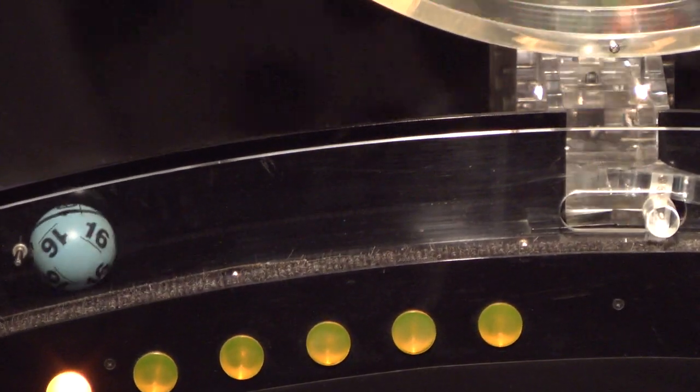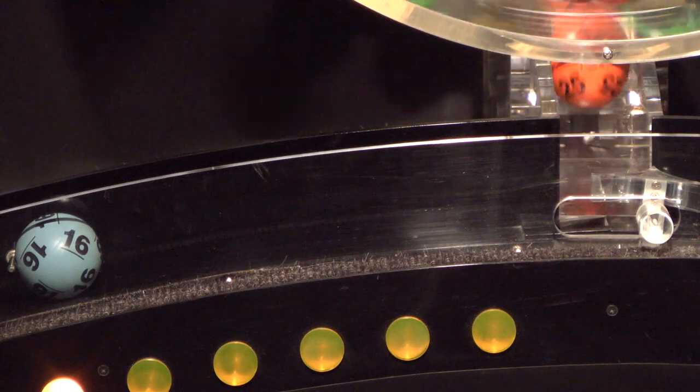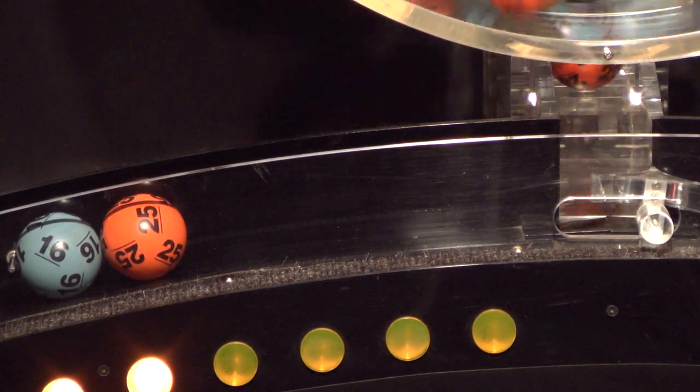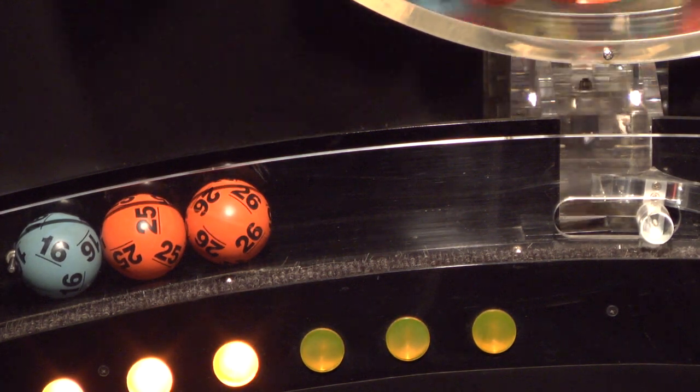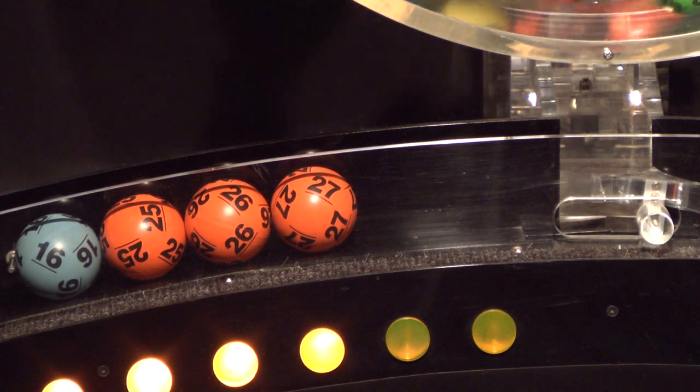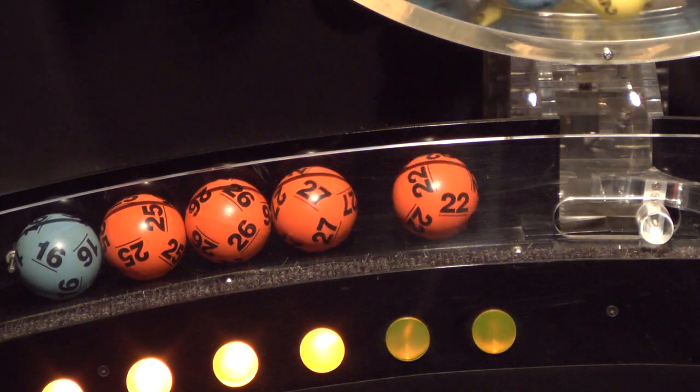Our first number up is number 16. And after that we have number 25. Following that is number 26. Up next, number 27. And the final ball in this sequence is number 22.